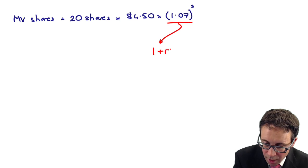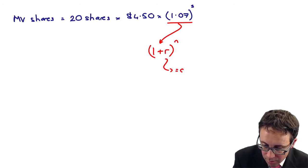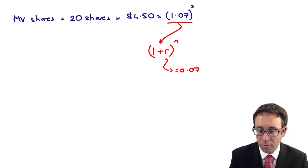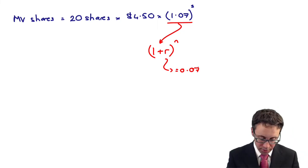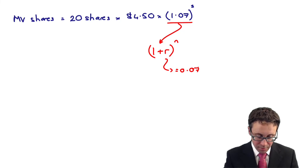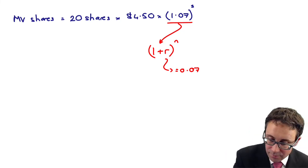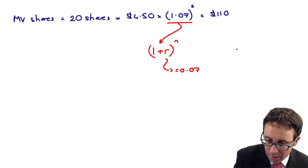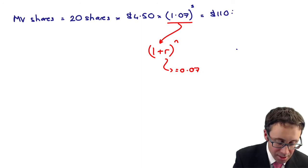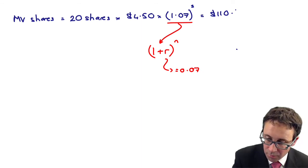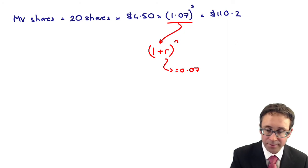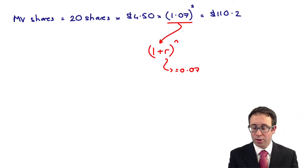So that's 1 plus R to the N, 1.07 to the power of 3, times 4.5 times 20, is 110.2. We'll just put 110.2 to be consistent with what we have elsewhere. You might get 110.3. You're not going to lose any marks. Based on my calculations that I did earlier, I'm not really worried about it. Put in 110. It will make life much easier.